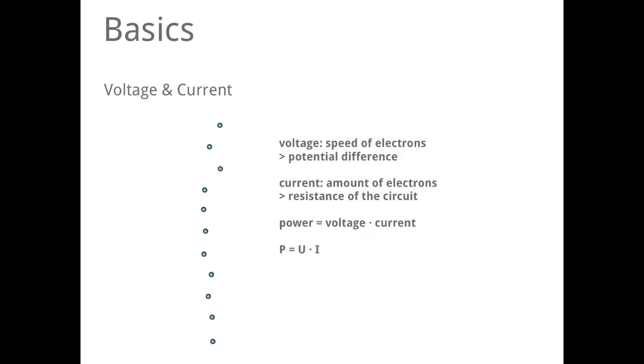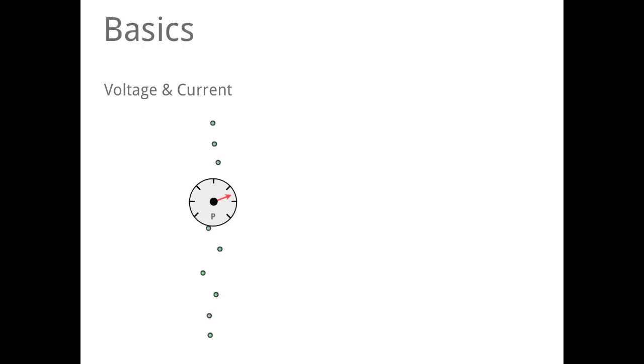The electrical power, and this is actually what is interesting for us, is voltage times current. This little display will show the power in our circuit. So we have an average amount of electrons and we have an average speed of electrons. So the voltage and the current is in a medium level.